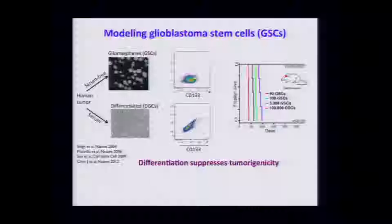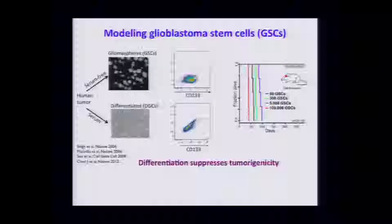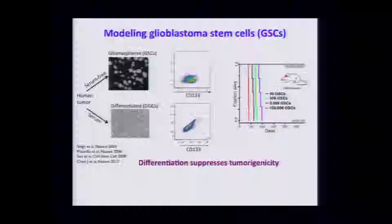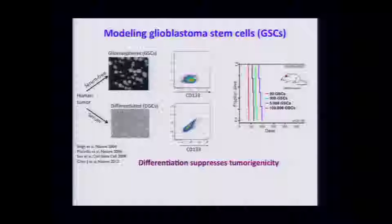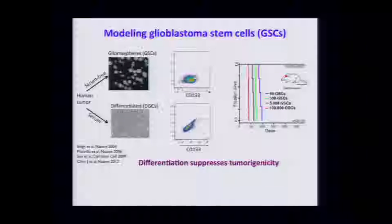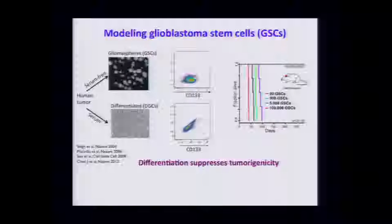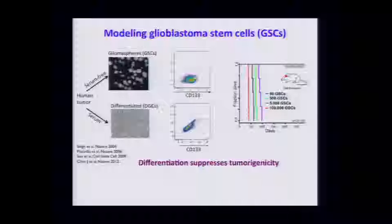You can differentiate the stem-like cells by putting them into serum conditions — they'll differentiate and are no longer tumorigenic. There's a directional relationship: these stem cells are a primitive state and they will differentiate. But you can't go back. If you take the non-stem cells in serum, they won't return to the initial state — they basically won't proliferate as glioma spheres.